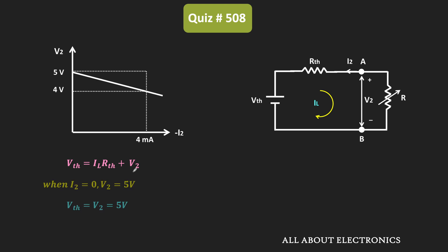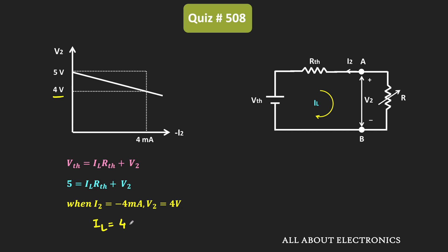Now we can write: Vth = IL × Rth + V2. From the plot, when minus I2 = 4mA, V2 = 4V. So when I2 = −4mA, IL = 4mA (since IL = −I2). Substituting: 5V = 4mA × Rth + 4V, which gives Rth = 1V / 4mA = 250Ω. In this way, we also obtained the value of Rth.